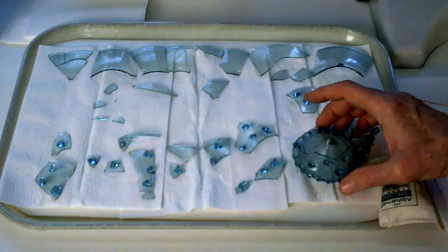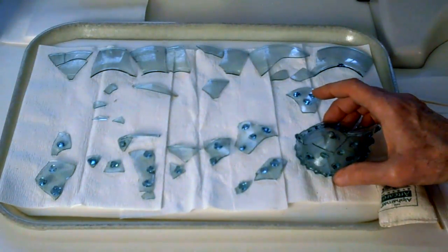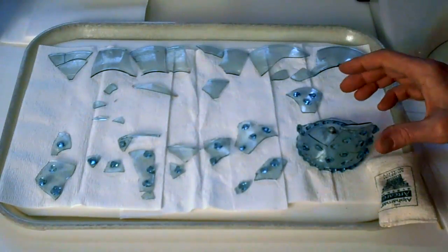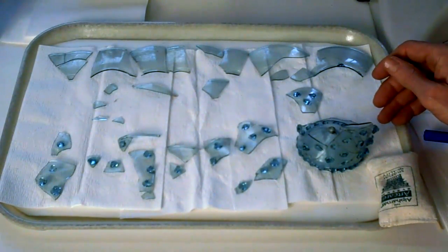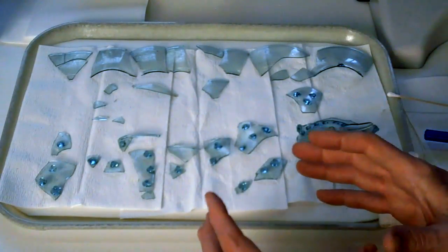I started with the base because the base was almost completely intact and it makes most sense in assembling a glass to work from the base upwards. This gives you more structural support and also checks each join as you're working around the piece.